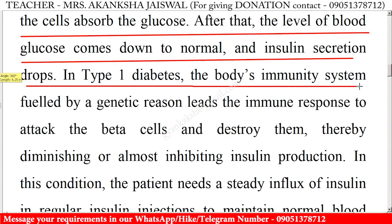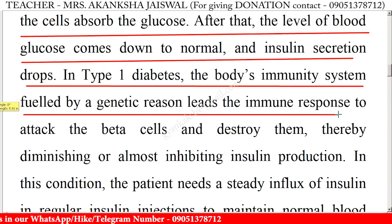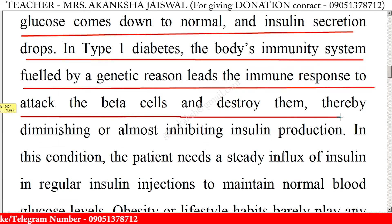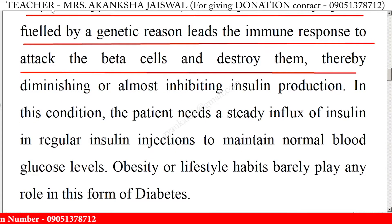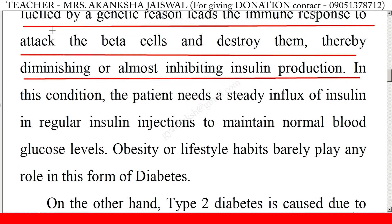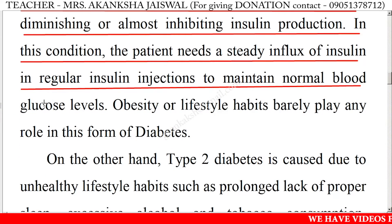In type 1 diabetes, the body's immunity system, fueled by a genetic reason, lets the immune response attack the beta cells and destroy them, thereby diminishing or almost inhibiting insulin production. In this condition, the patient needs a steady influx of insulin in regular insulin injections to maintain normal blood glucose levels.